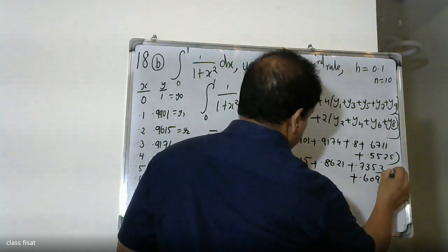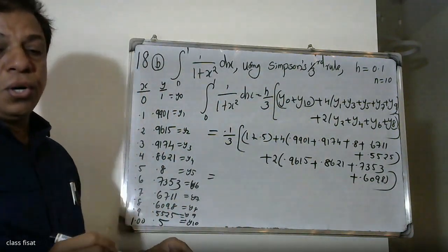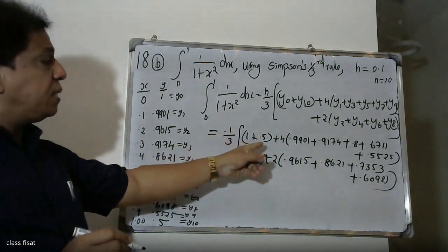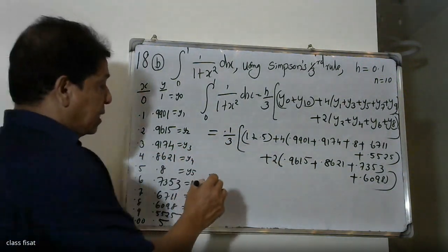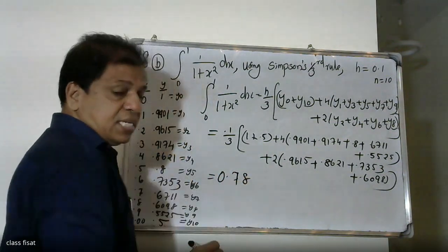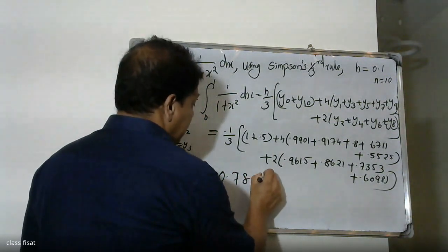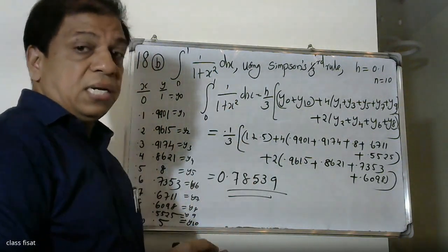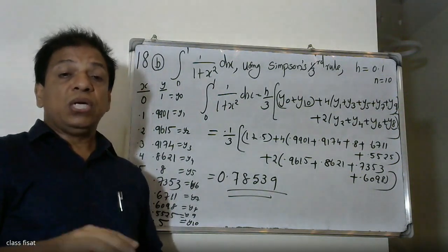This gives the value. Using a calculator, we get the answer: 0.7853978. This confirms the result, which we can verify using the actual integral.